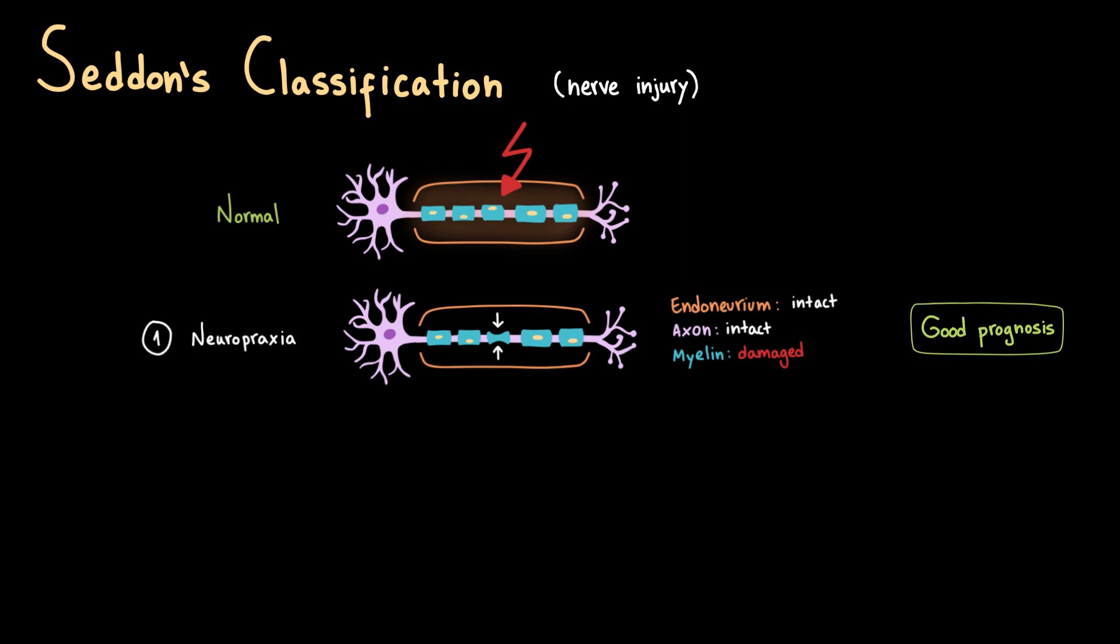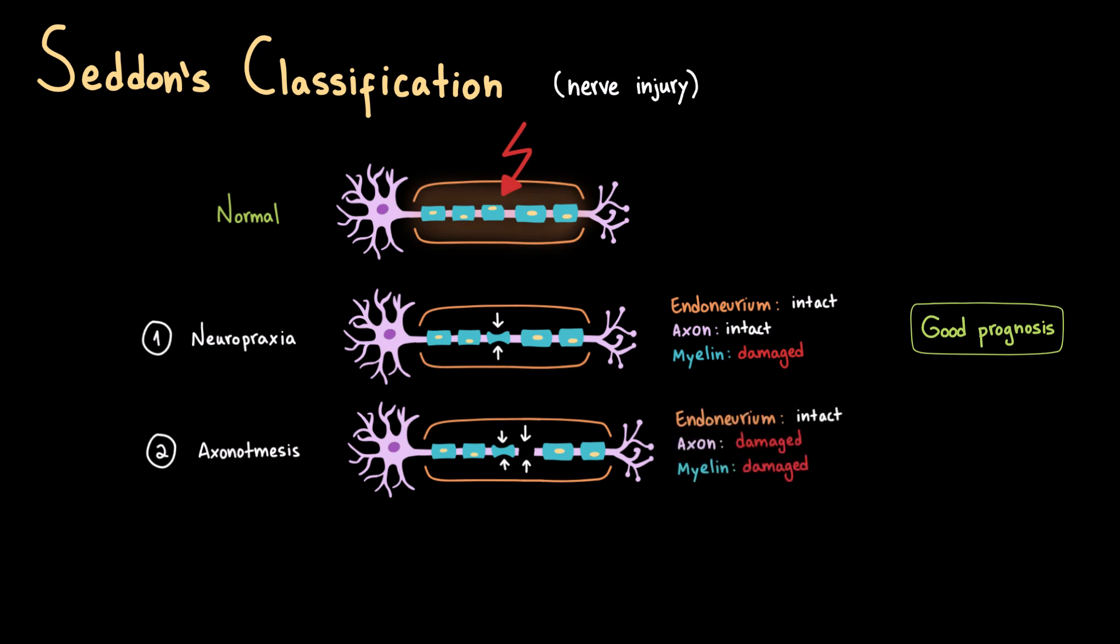The second level is axonotmesis. Here, the endoneurium is still intact, but the axon itself is damaged and the myelin is also damaged. Since the endoneurium is intact, it provides a guiding path for regenerating axons to grow back toward their targets. In this case, the distal end of the neuron will die, meaning that it will degenerate while the proximal stump will start to regenerate. In axonotmesis, recovery is possible, but much slower than neuropraxia, because the axon has to regrow from the site of injury all the way back to its target muscle or skin area.